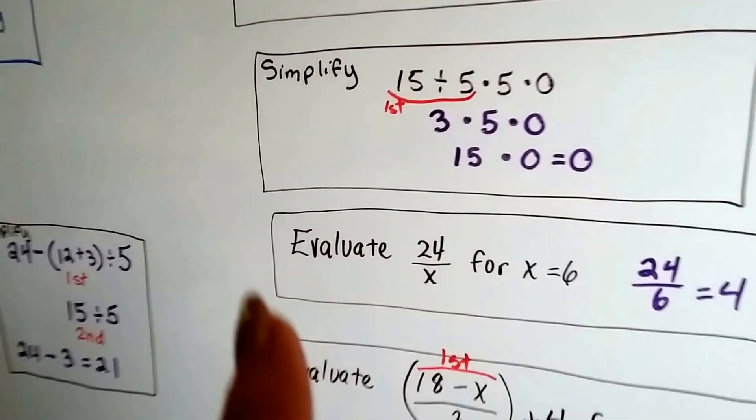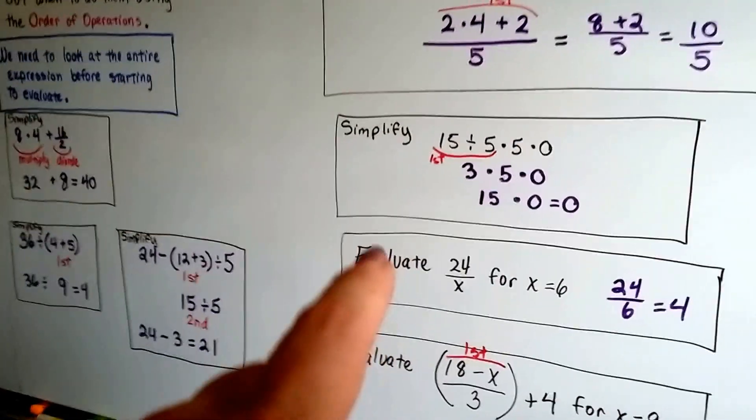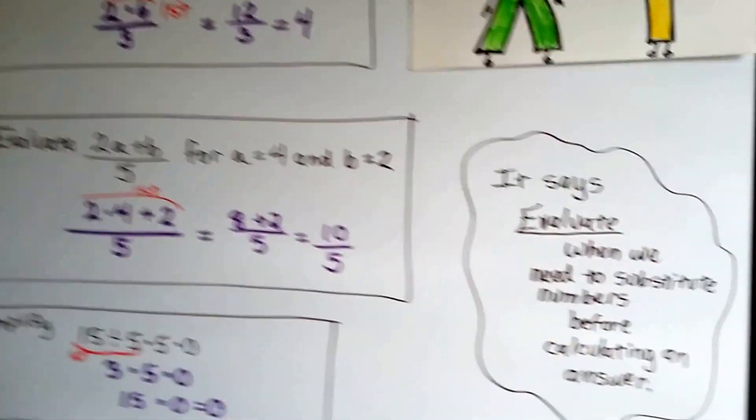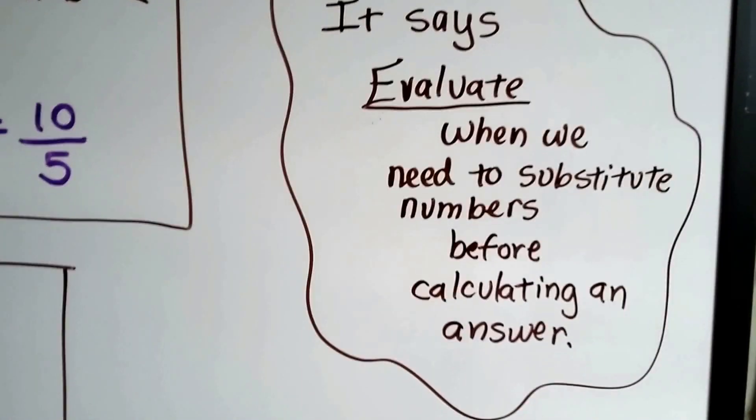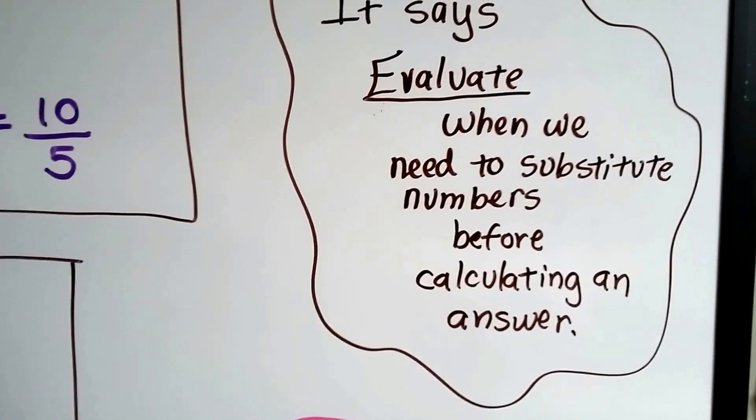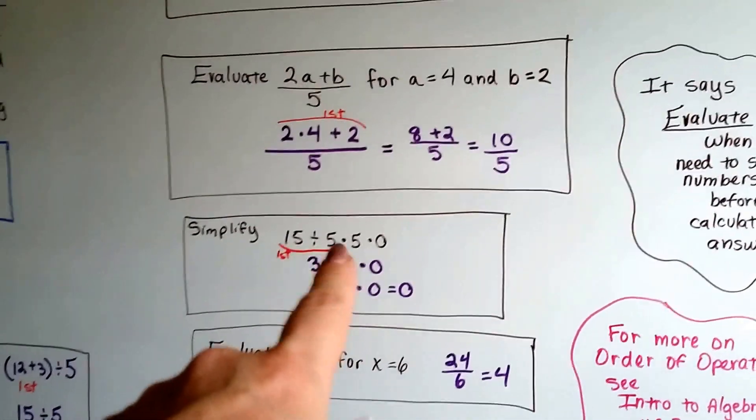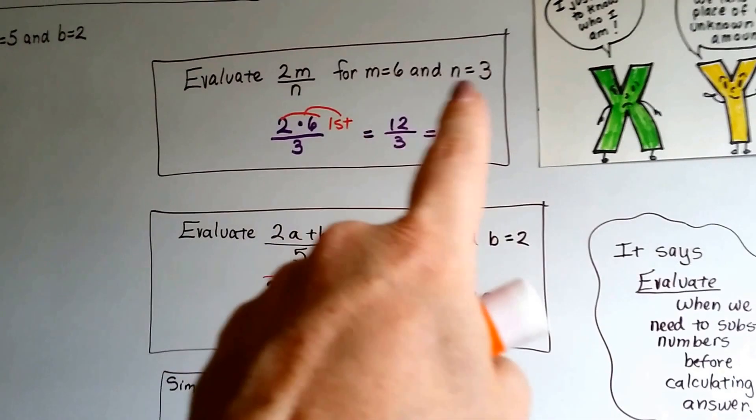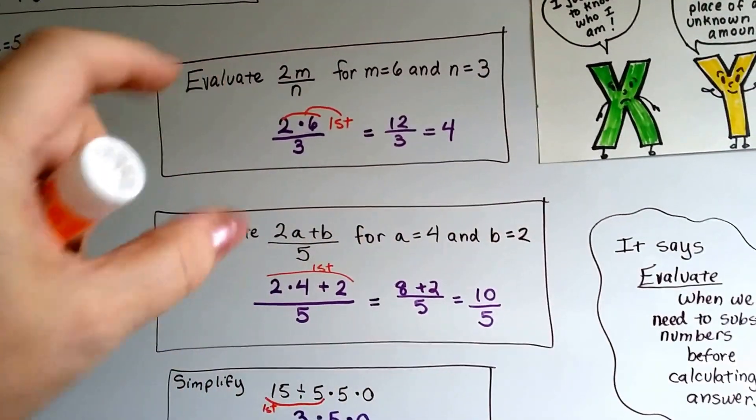Some said simplify and some said evaluate. If it says evaluate, that's when we need to substitute numbers before calculating an answer. This one had all numbers in it and says simplify. This one said a equals 4 and b equals 2, and this one said m equals 6 and n equals 3, and they said evaluate.